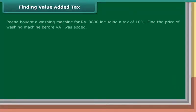Finding Value-Added Tax. Rina bought a washing machine for Rs. 9,800, including a tax of 10%. Find the price of the washing machine before VAT was added.